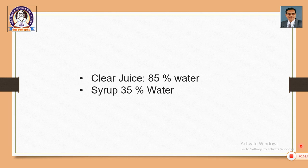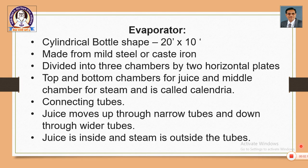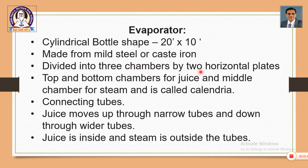We start from clear juice containing 85% water and we end up with syrup having 35% water. An evaporator is a cylindrical, bottle-shaped container having 20 feet height and 10 feet diameter. Dimensions depend upon the requirement of the unit. It is made from mild steel or cast iron. It is divided horizontally into three chambers by two horizontal plates. Top and bottom chambers are for juice and the middle chamber is for steam, and is called the calendria.